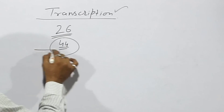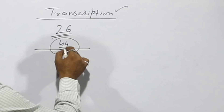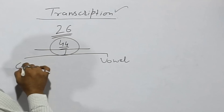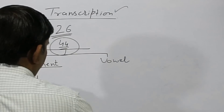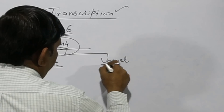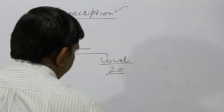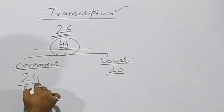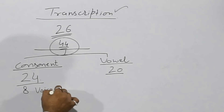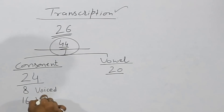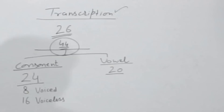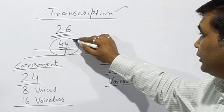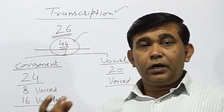These 44 sound symbols can be divided into two categories: vowel sounds and consonant sounds. We have 24 consonant sounds and 20 vowel sounds. Out of these 24, we have 8 voiced and 16 voiceless — or unvoiced. All the vowels are voiced. So in today's video we will learn these 44 sound symbols.